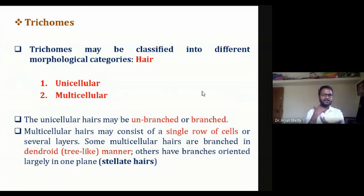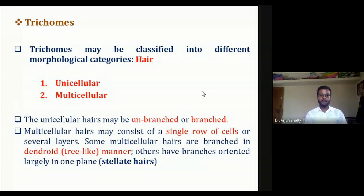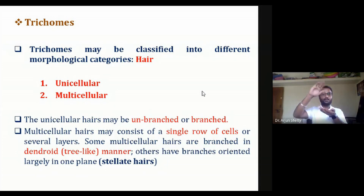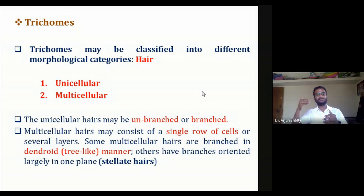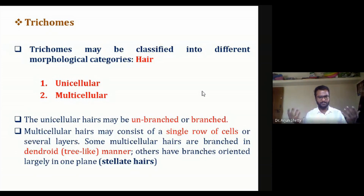Based on cellular pattern, trichomes are classified into two types: unicellular hair and multicellular hair. Unicellular trichomes may occur like a needle or may be branched like a tree. Multicellular trichomes contain a row of cells arranged one above the other, or multi-seriate cells at the origin with the number of cells reducing toward the top, giving a dendroid or tree-like shape.